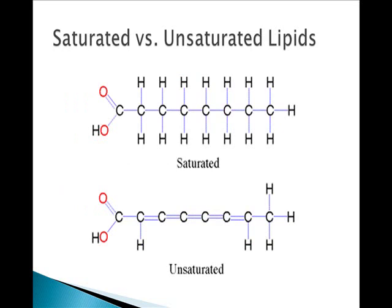Lipids also come in two basic flavors: saturated and unsaturated lipids. Saturated means that all carbon-to-carbon bonds are single bonds, and all of the remaining carbons are filled with as many hydrogens as will fit — that's what saturated means. Unsaturated lipids have one or more double bonds between carbons and tend to be solids at room temperature, while saturated lipids tend to be liquid at room temperature, so oils are commonly saturated lipids.